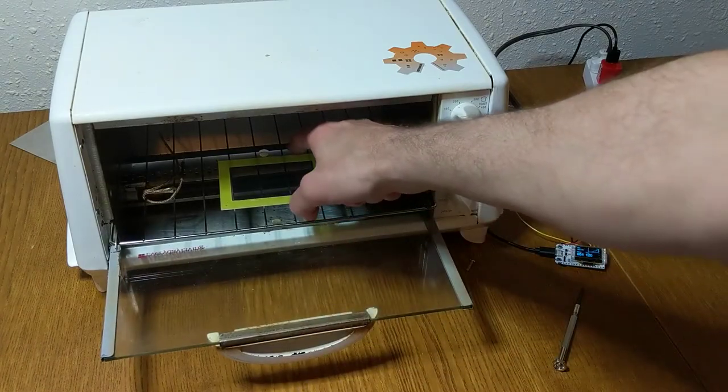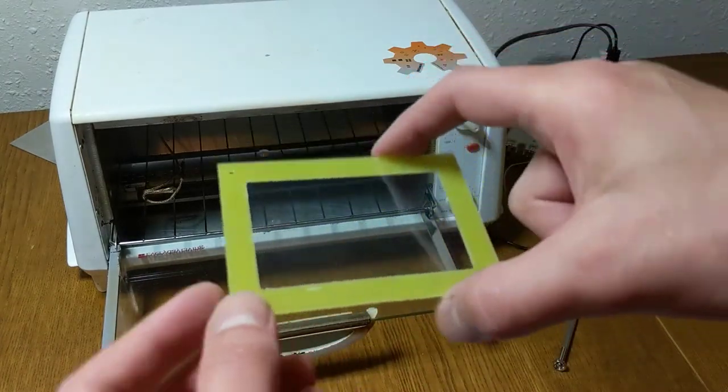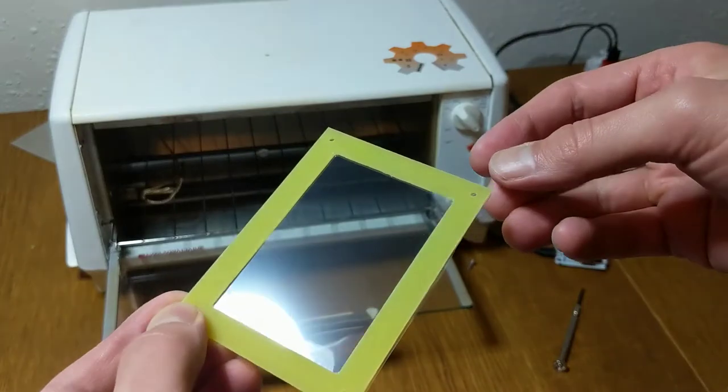After a few minutes in the oven pull that back out and now the mylar is nice and flat and ready for spin coating.